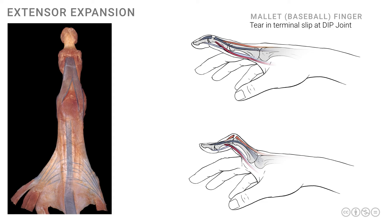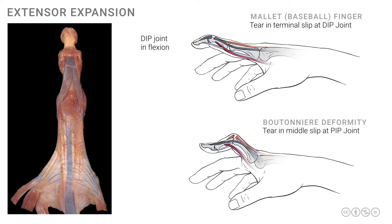This results in what is known as an extensor lag. The DIP joint is kept in a position of flexion. Another presentation is the boutonniere deformity, in which the middle slip is torn at the PIP joint. Therefore, the PIP joint falls into a position of flexion. Over time, the lateral slips can migrate in a palmar or volar direction, and they in fact become flexors of the PIP joint rather than remaining extensors. They can exacerbate the flexion deformity at the PIP joint, and with their further shortening, they can hyperextend the DIP joint. That produces the classic boutonniere deformity, as seen in the diagram.